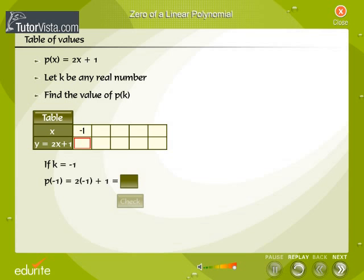If k = -1... If k = -0.5... If k = 0... If k = 0.5... If k = 1...